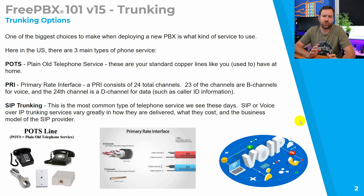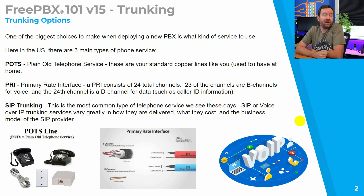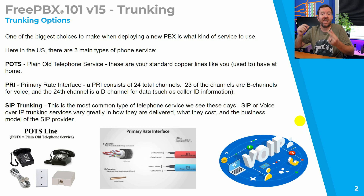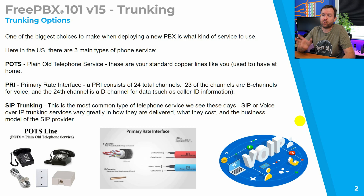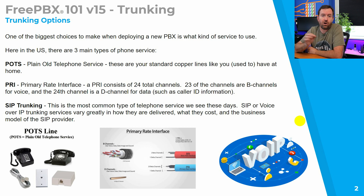When we talk about trunking here in the U.S., we're typically talking about three different main types. We've got POTS lines — plain old telephone service, standard copper lines like you would have at your home. Then we have PRI, which stands for primary rate interface, essentially a copper cable consisting of 24 individual channels, with 23 B channels for voice and one D channel for data such as caller ID. And finally we have SIP trunking, the most common type of telephone service these days, also known as VoIP trunks or SIP trunks. These IP trunking services vary greatly and we're going to talk about all of that in this video.